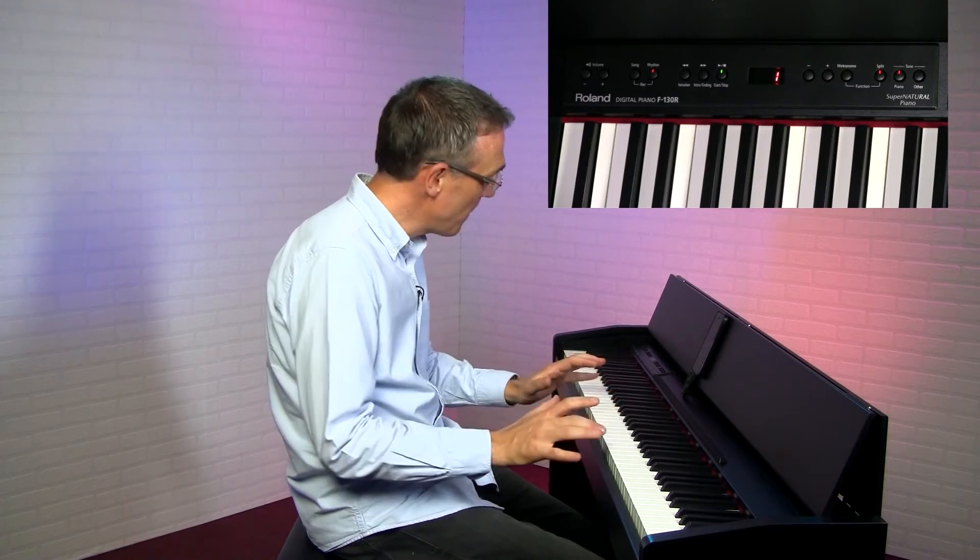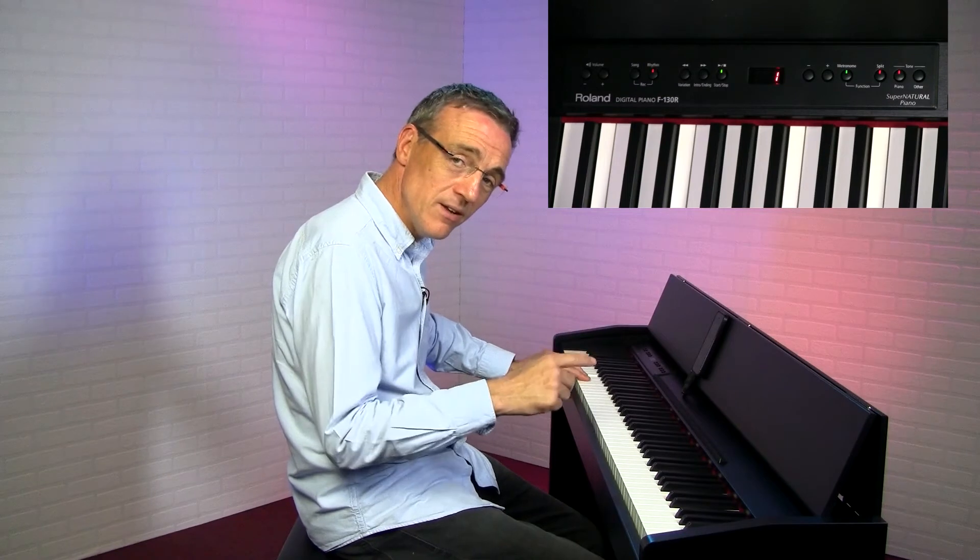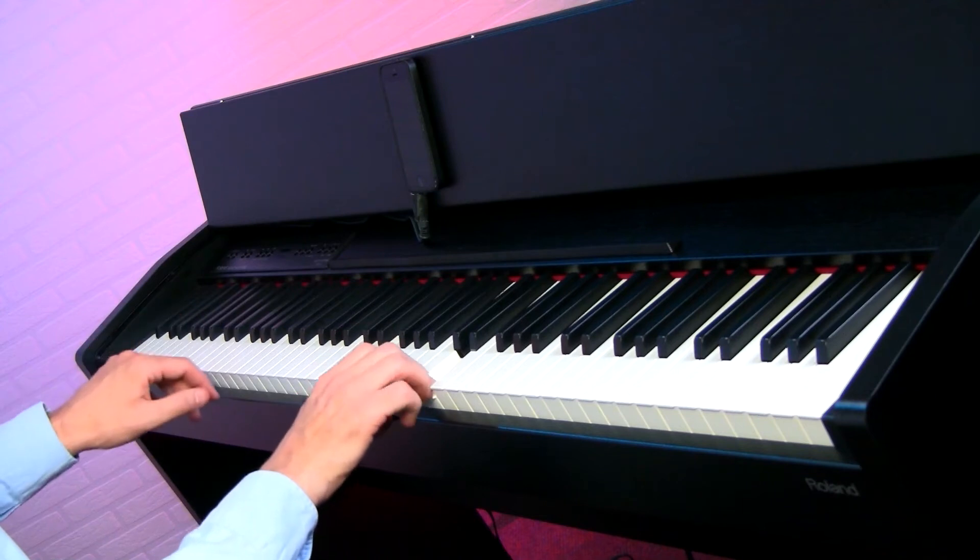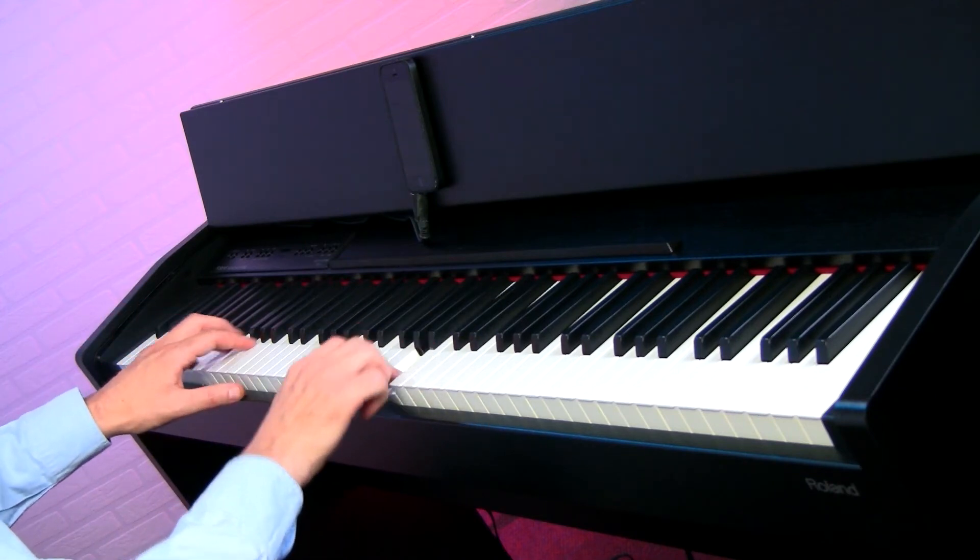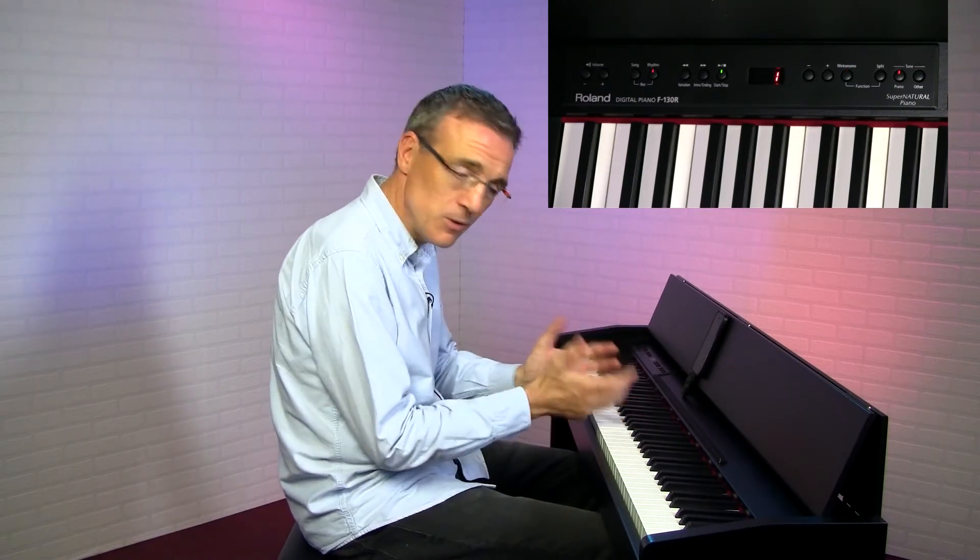Some digital pianos feature auto accompaniment, and these are basically rhythm tracks with some backing as well, and basically you can control these from the chords that you play, in one of two ways. Firstly, you can either play the chords in your left hand and a melody in your right hand, like this, or you can play normally, and the piano will work out the chords from all of the notes that you are playing.